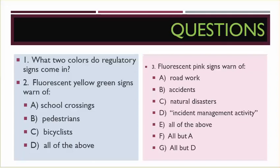Number two, fluorescent yellow-green signs warn of A: school crossings, B: pedestrians, C: bicyclists, D: all of the above.